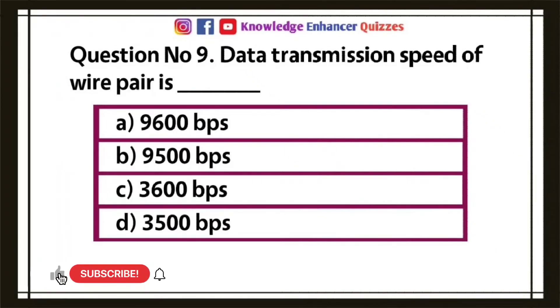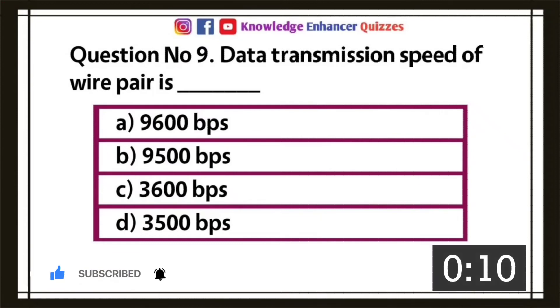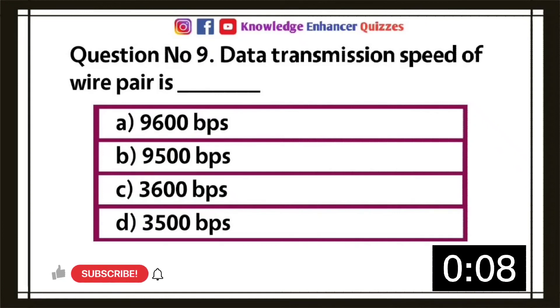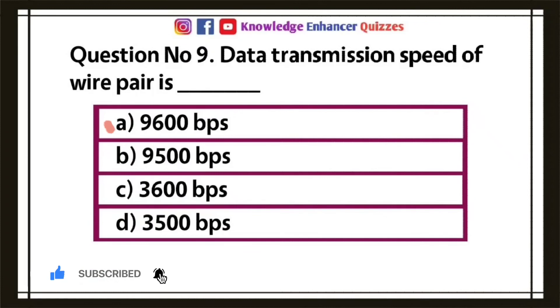Question number nine, data transmission speed of wire pair is: A, 9,600 bits per second; B, 9,500 bits per second; C, 3,600 bits per second; D, 3,500 bits per second. Option A is the right answer.